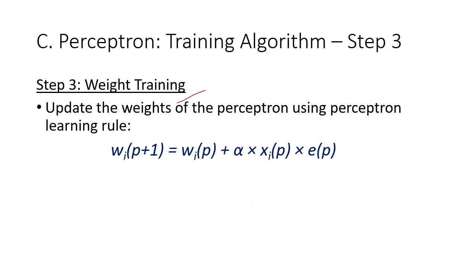Weight training is applied when the error — which is the value of desired output minus actual output — is not 0. The weight is trained using the perceptron learning rule as discussed in the previous video.